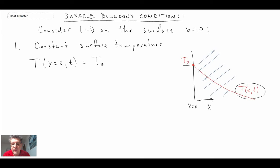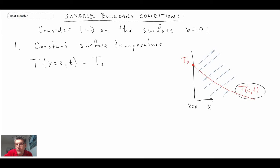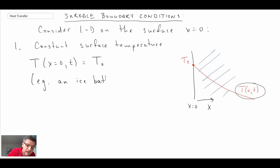How might you create that type of boundary condition? One way that you could do that is with an ice bath, for example, or boiling water, although that would vary depending upon the elevation of where you are located. A good example here would be that of an ice bath. So that's the most simple boundary condition that you can encounter.